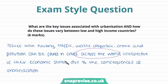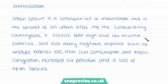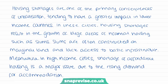Moving on, I'll give a definition of urban sprawl and some initial consequences: urban sprawl is a consequence of urbanisation and is the spread of an urban area into the surrounding countryside. It affects both high and low income countries and has many negative impacts, such as wildlife habitat loss, more fuel consumption and traffic congestion, increased air pollution and a loss of open spaces. My next paragraph relates to housing shortages: housing shortages are one of the primary consequences of urbanisation, tending to have a greater impact in lower income countries. In these cities, housing shortages result in large areas of informal housing such as slums, which are often constructed on marginal land and lack access to basic infrastructure. Meanwhile, in high income cities, shortage of affordable housing is a major issue due to rising demand.